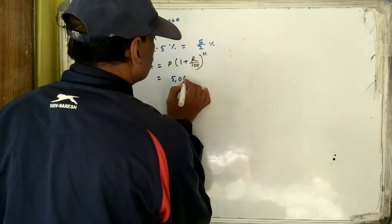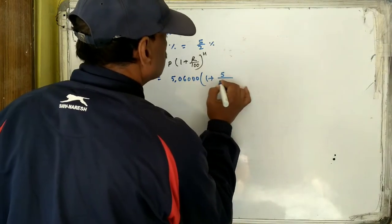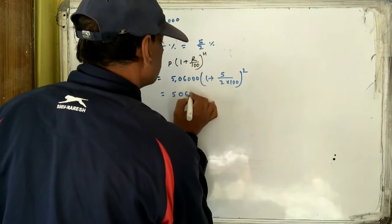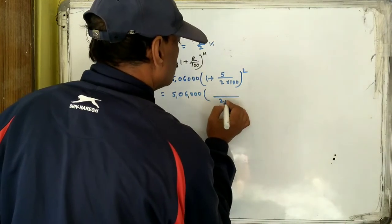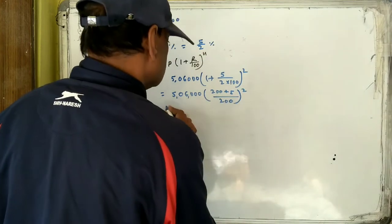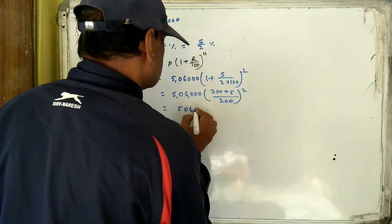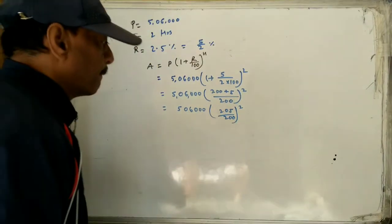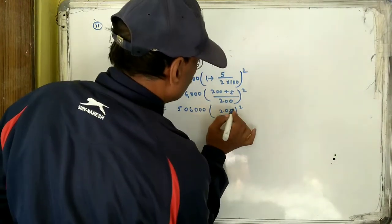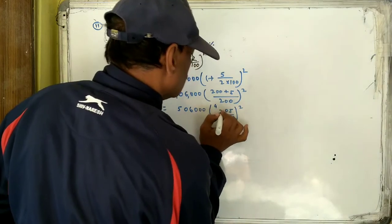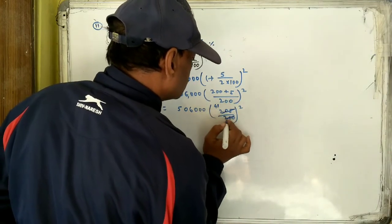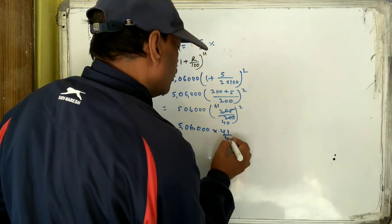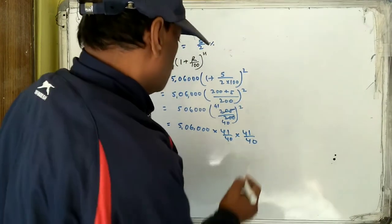For question 11: 56,000 into (1 plus 2.5 by 100) squared. The rate 2.5 equals 25 by 10, so 25 by 10 divided by 100 gives 25 by 1000, simplifying with LCM 200 to get (200 plus 5) by 200, which is 205 by 200. Further simplifying, we cross to get 41 by 40. So the expression becomes 56,000 into (41 by 40) into (41 by 40).